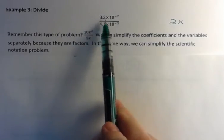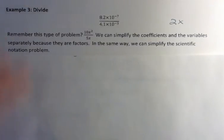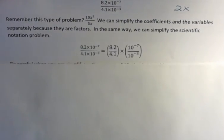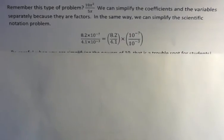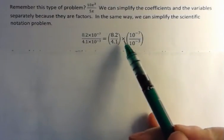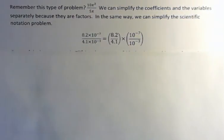In the same way, we can simplify the scientific notation problem, because these things are factors. They're being multiplied. We're using an x, but it still means multiplication. So let's see how I would rewrite that. I would rewrite that as 8.2 over 4.1, and then times this, so I'm going to simplify those.